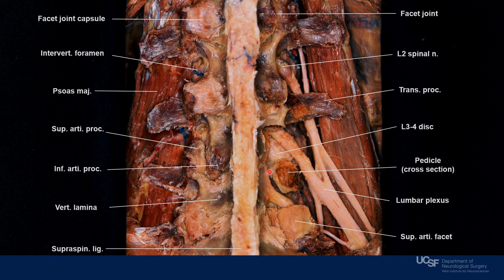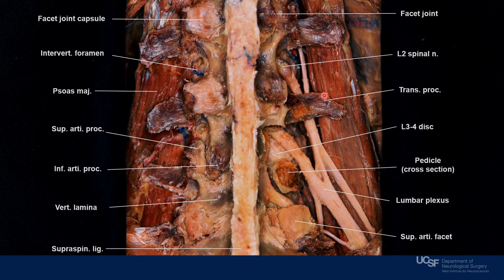There are three segments during the exit of this nerve root. The most medial segment is the retrodiscal segment, then the parapedicular segment, and the intervertebral foramen itself. Anterior to the transverse process and protecting the lumbar plexus, we can find the psoas major muscle.